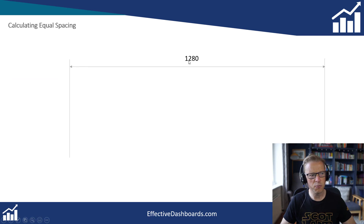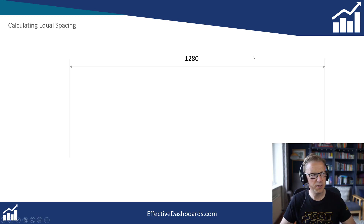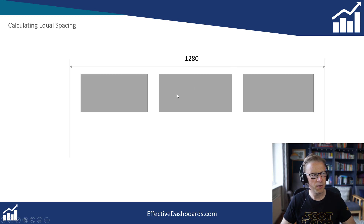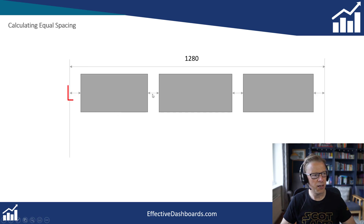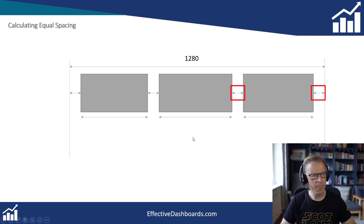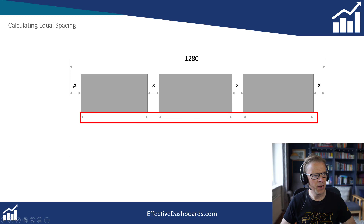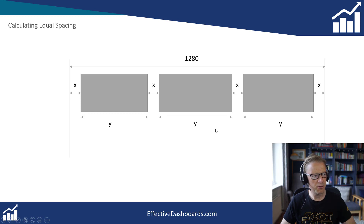So we've got the width of the screen here, which is 1,280 — but this could be any width you want your report to be. We've got our three visuals here, and again this can work for any number of visuals you want. We want an equal distance between the side of the screen and between each of the visuals, and we also want the visuals to be exactly the same size. So we're going to call each gap X because they are all the same width, and we're going to call each visual width Y. Then we do some simple mathematics: 4X plus 3Y must equal 1,280.